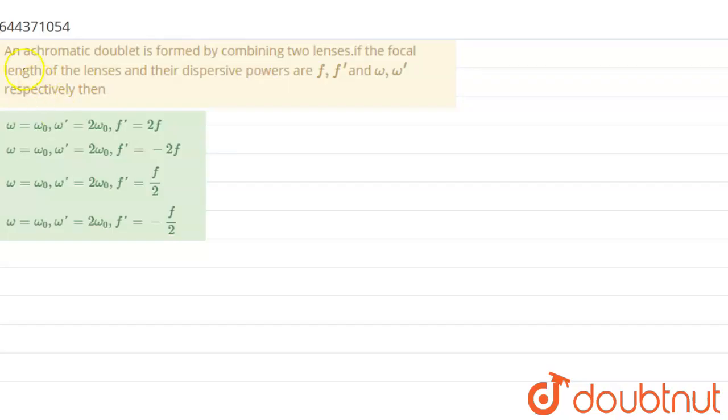The question is: an achromatic doublet is formed by combining two lenses. If the focal length of the lenses and their dispersive power are f and f' and omega and omega' respectively, then...